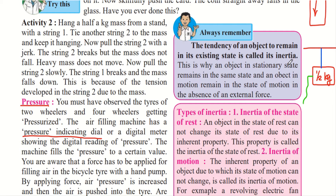An object in a stationary state, that is when the body is at rest, remains in the same state. And an object in motion keeps on moving and remains in the state of motion in the absence of an external force. If a body is in motion, it will continue to move until an external force is applied. And if the body is at rest, it will remain at rest unless an external force is applied.